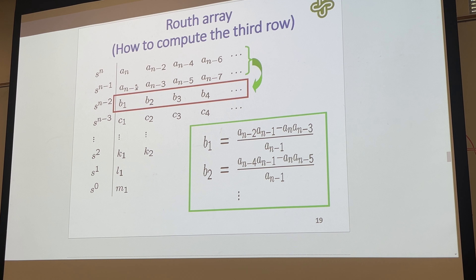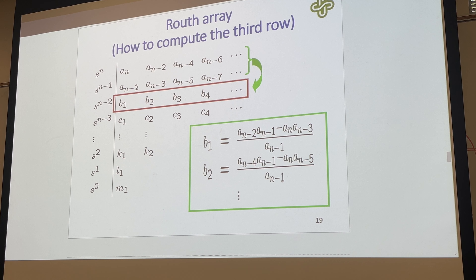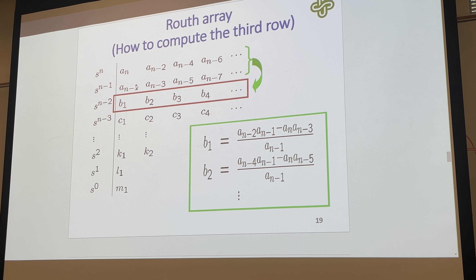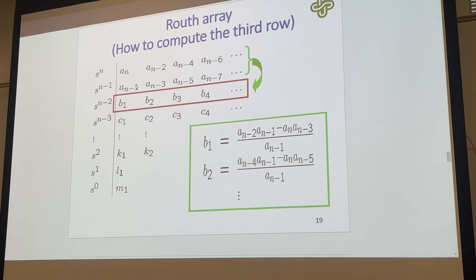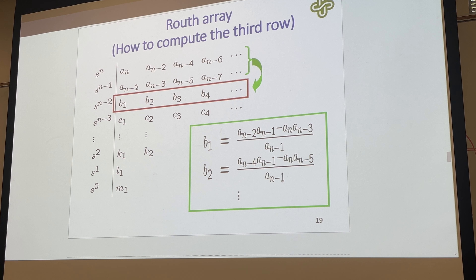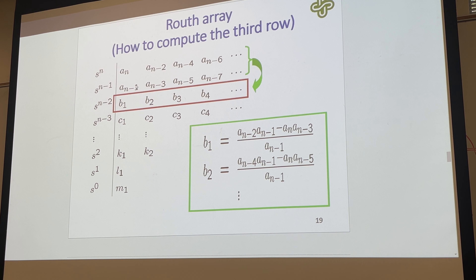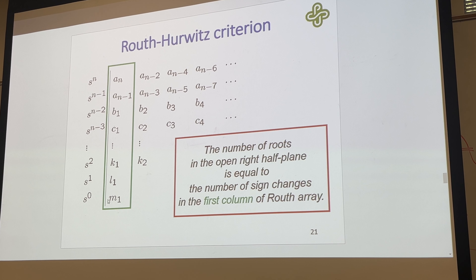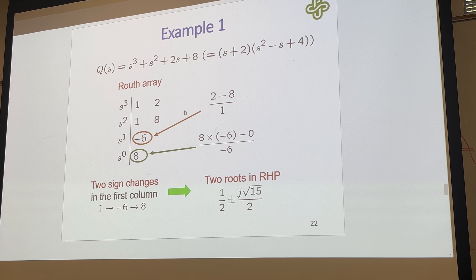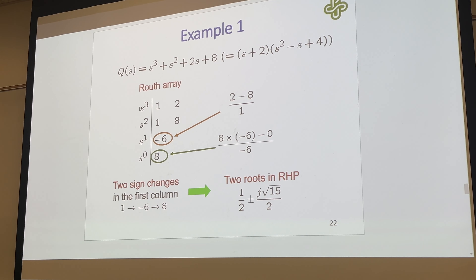We'll get into some special cases, including correcting the one where we have a zero but not all zeros in a row. Once we have the array fully built, we can determine the number of roots in the open right half plane by counting sign changes in the first column. If all values in the first column are positive, there are no sign changes and no roots in the open right half plane. If they're all negative, there are also no sign changes and no roots. One sign change means one root in the right half plane.